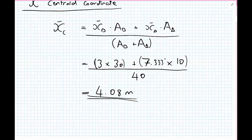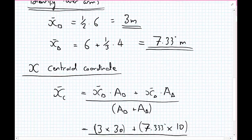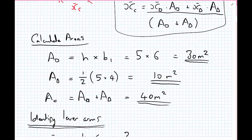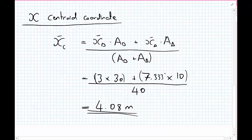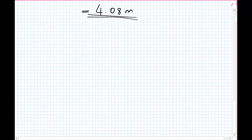Before we move on to doing the y-direction, it's always useful as a sanity check. We had 4.08 metres. Going back to our original drawing, this was around about 3 metres, so 4.08 metres is roughly in the location we guessed in the first place. Just a little sanity check — no mathematics involved, just: does it look right?